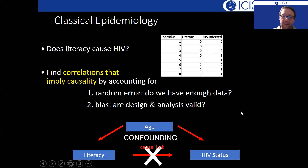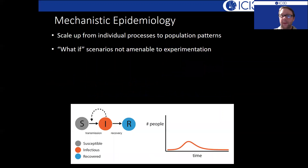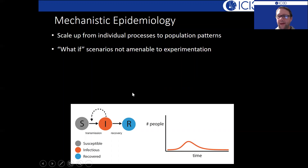In mechanistic epidemiology we do things a little bit differently. It's not at the individual level per se — we're talking about a system at the population level, specifying how things are all interacting and how they're mixing.